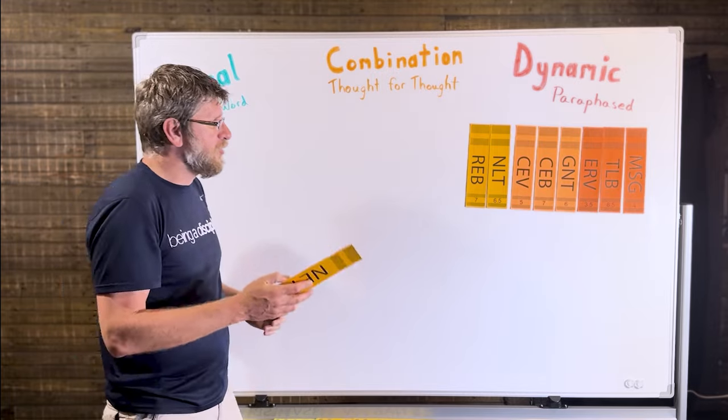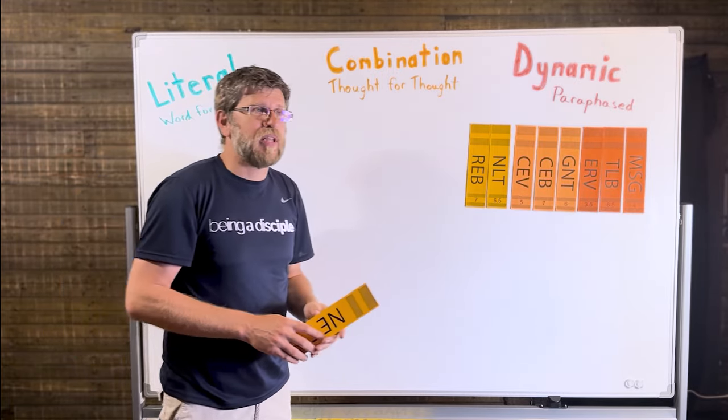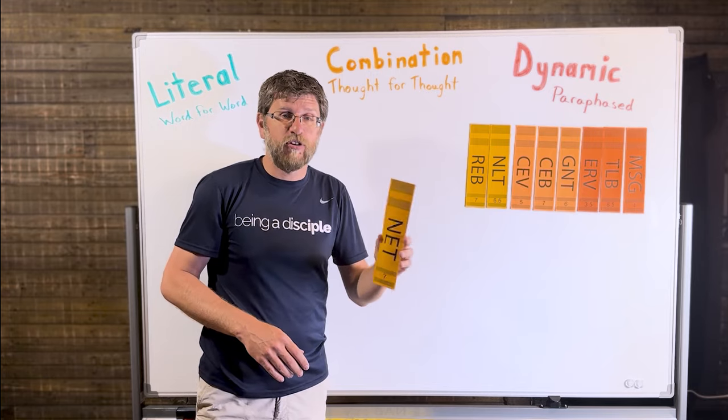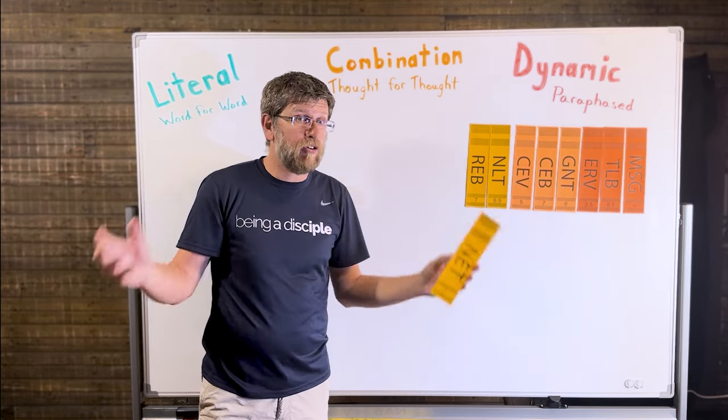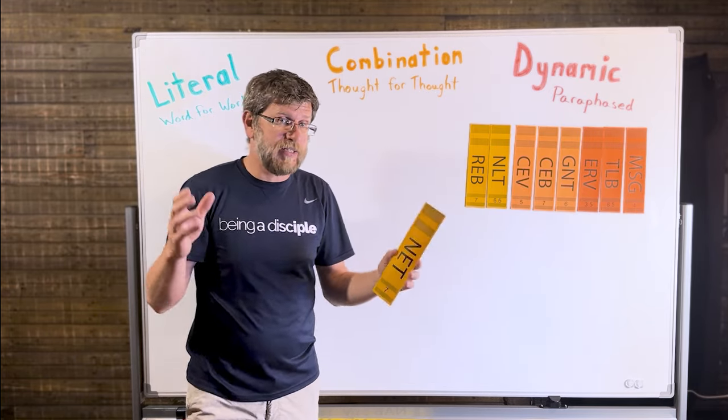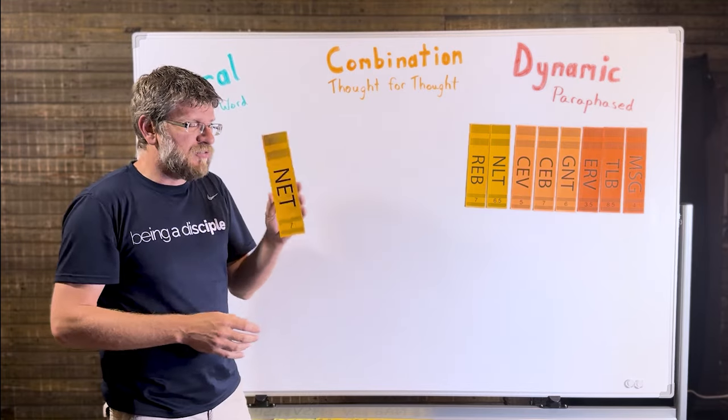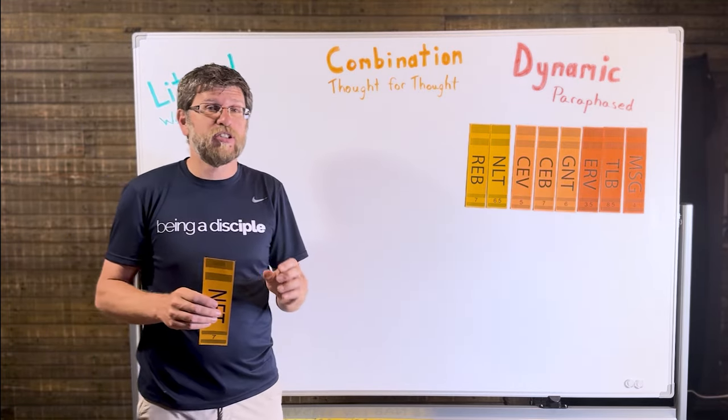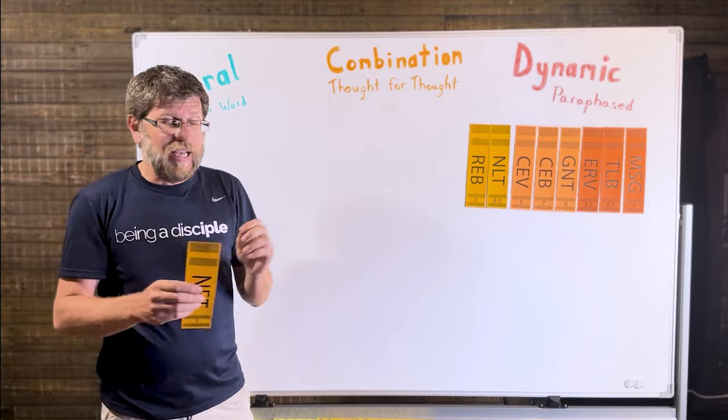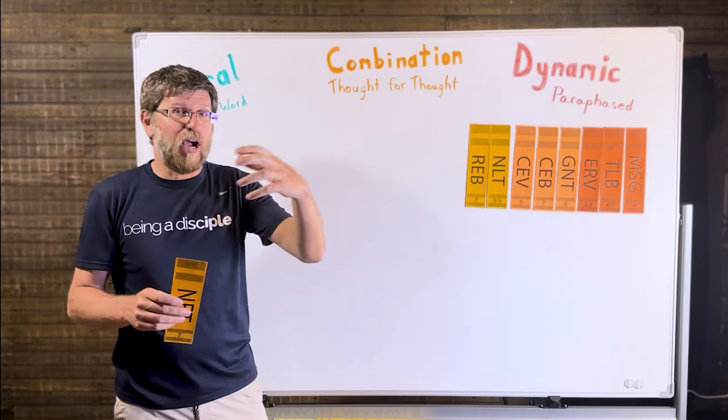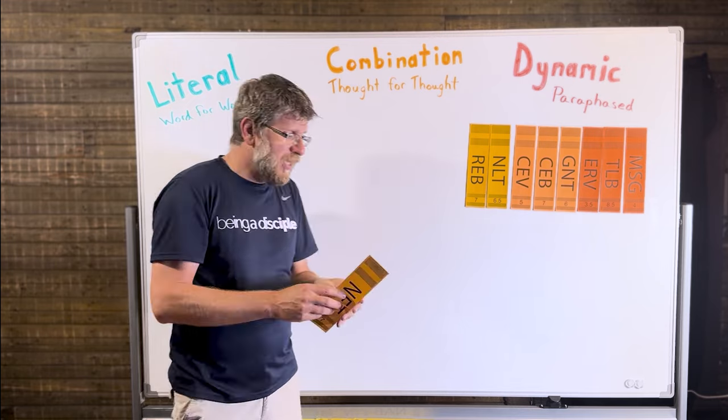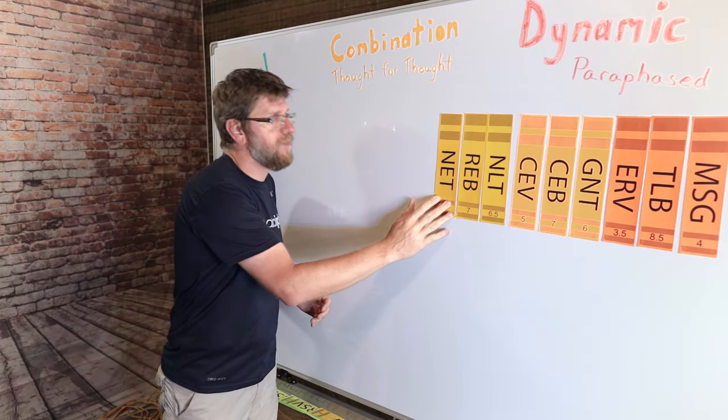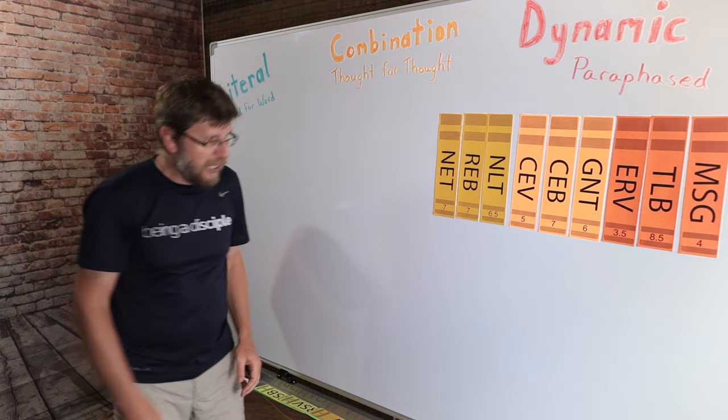And then we have the Net Bible, one of my favorites. In the early 2000s, they set out to create a digital version of the English Bible that's free for all, that anybody can access it, download it, and read it. But what's very interesting about the Net Bible, it includes over 60,000 translator notes. And in those, you can read why they chose that word, why they translated that way. And it's a great study Bible. Now it's in print, you can buy it, and it's a great one to have in your library.